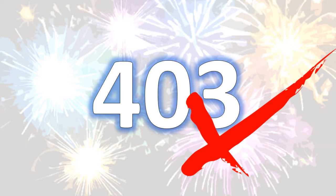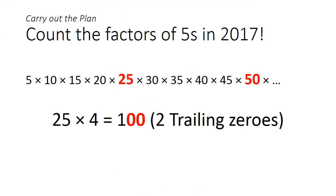Oops, 403 would be wrong. It turns out that for every 5 multiples of 5, there is a multiple of 25. And 25 is 5 squared, so it has 2 factors of 5s in it. This gives rise to 2 trailing 0s when multiplied by 4.